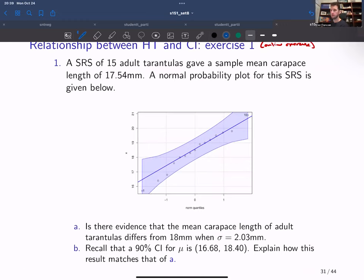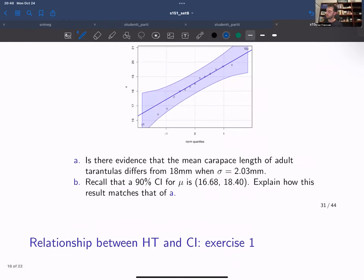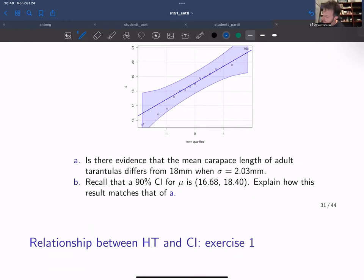This is the exercise from slide 31. We're going to use this example of a hypothesis test to illustrate not only the steps again, but how the conclusion from the test relates to the interval. We're using an example from lecture set number seven. We have a simple random sample of 15 adult tarantulas and they gave a sample mean carapace length of 17.54 millimeters. We want to know if there's evidence that the mean carapace length of adult tarantulas differs from 18 millimeters.